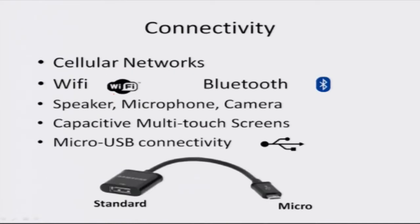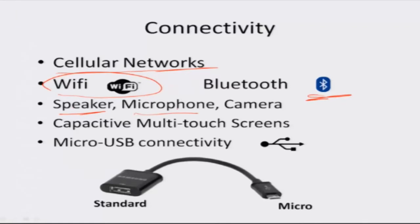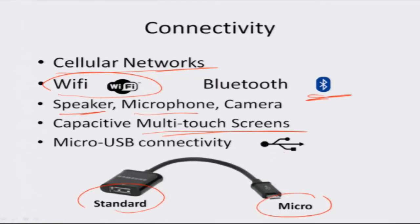In terms of connectivity, these phones allow us to connect using cellular networks — we know about 2G, 3G kind of networks, which we are going to study more of in the rest of the course. There is also connectivity using Wi-Fi or Bluetooth. Many of them have loudspeakers so you can raise the volume. It has a microphone to talk into, and then there are cameras — some smartphone cameras are very good and powerful, even replacing point-and-click cameras. It has capacitive multi-touch screens and you can also connect through a micro USB port.